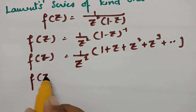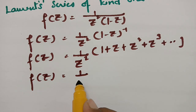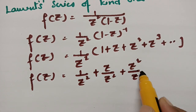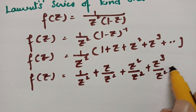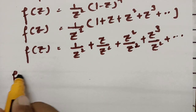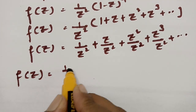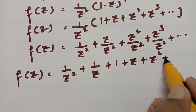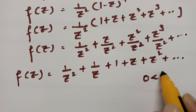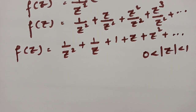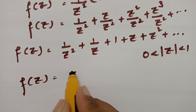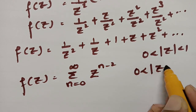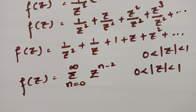So f(z) can be written by sending 1/z² inside: (1/z²) + z/z² + z²/z² + z³/z² + and so on. Therefore f(z) = 1/z² + 1/z + z + z² + and so on, where 0 < |z| < 1. This is the region of convergence. This can be written as f(z) = Σ (n=0 to ∞) z^(n−2), for 0 < |z| < 1. This is the first kind of Laurent series.